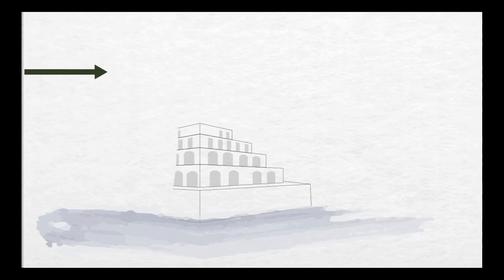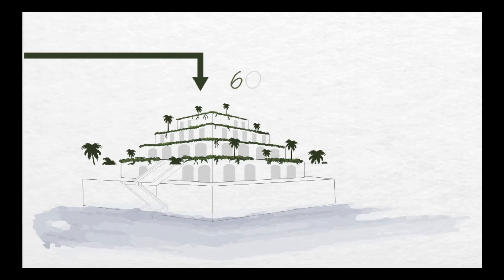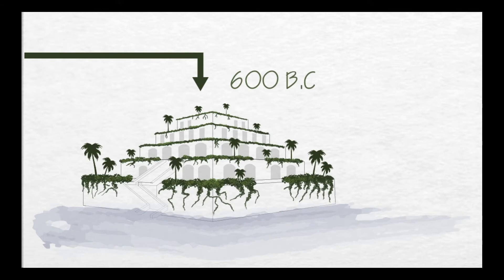The first known green walls were found in the Hanging Gardens of Babylon in 600 BC. Green roofs were used in cave-like structures covered with earth and plants to fulfill the role of agriculture, dwelling, and ceremonies.